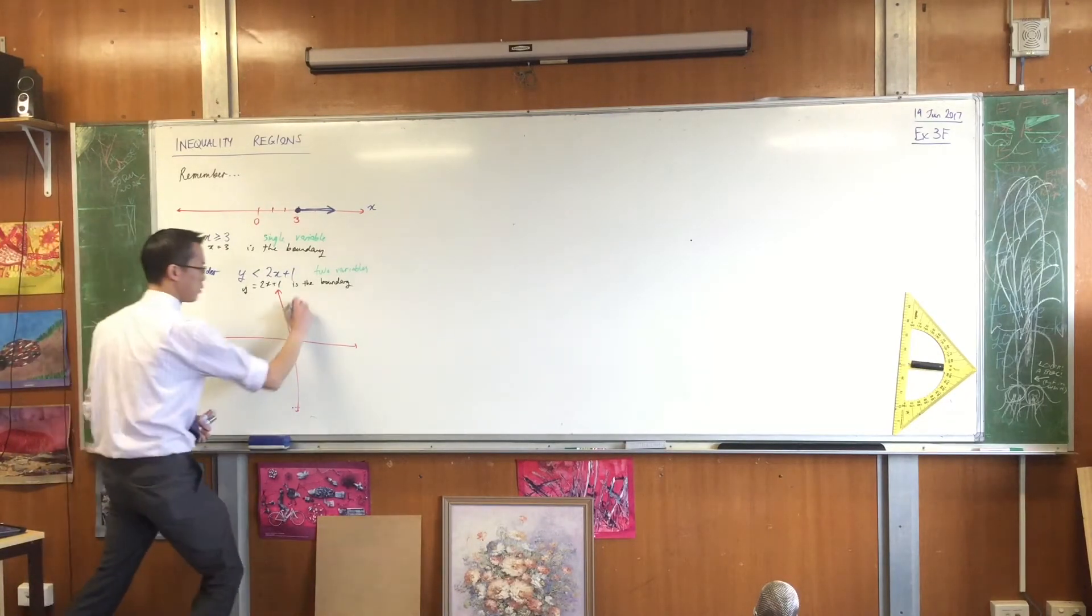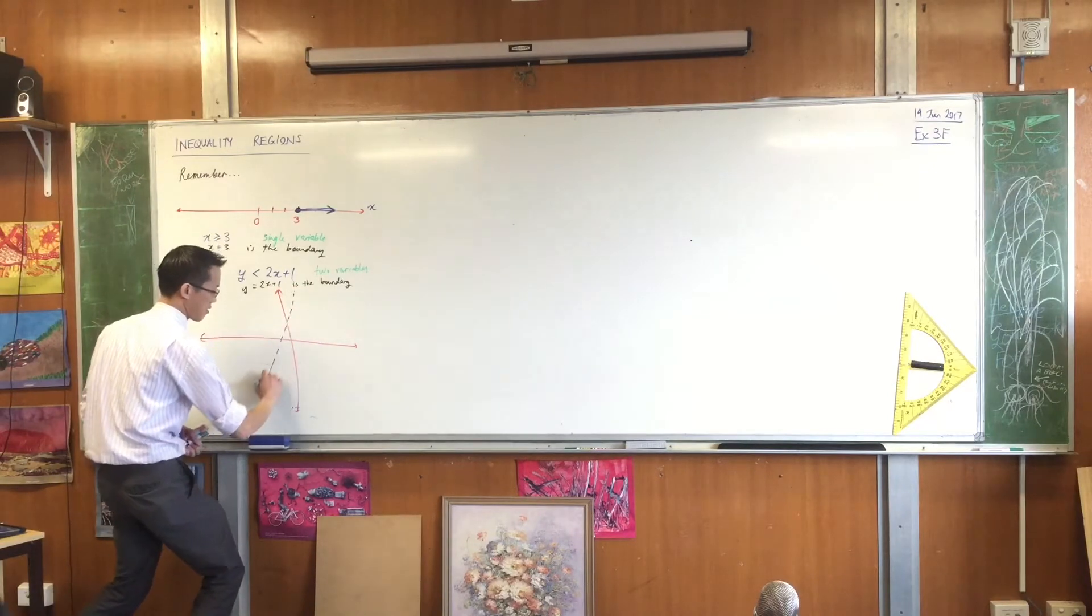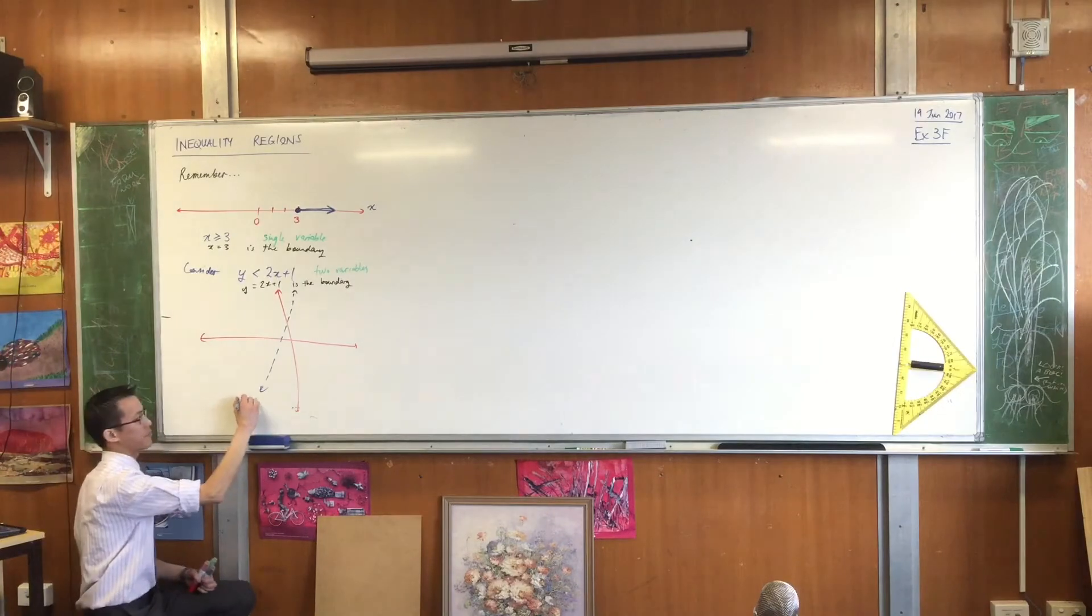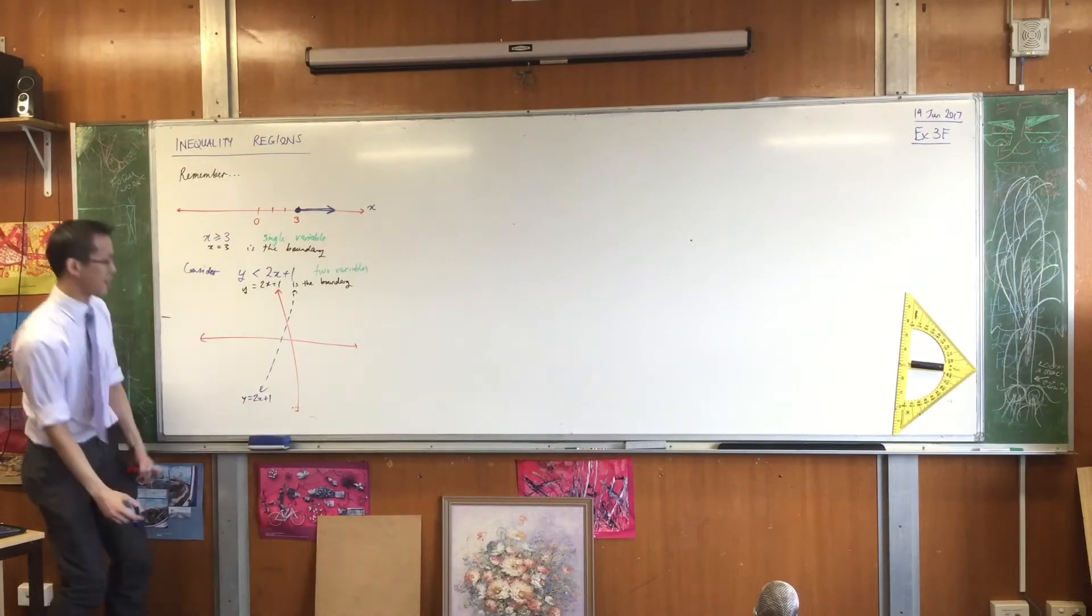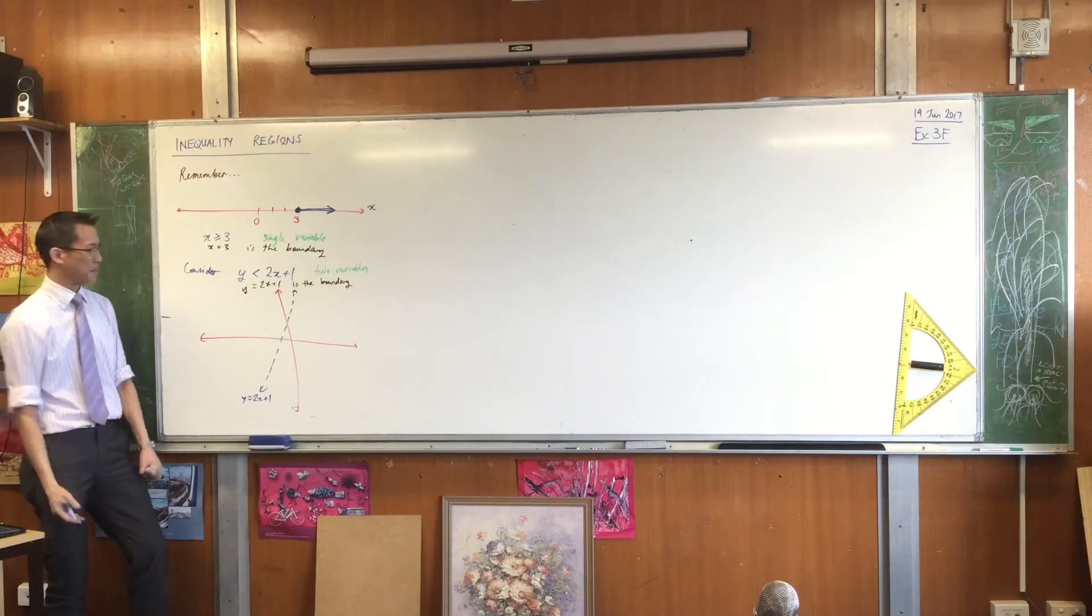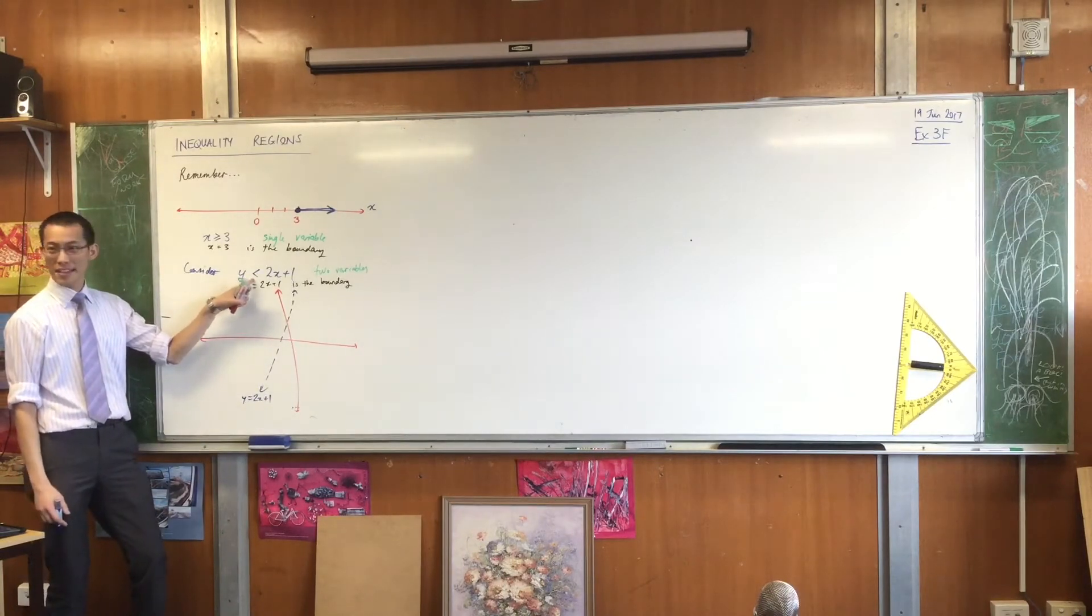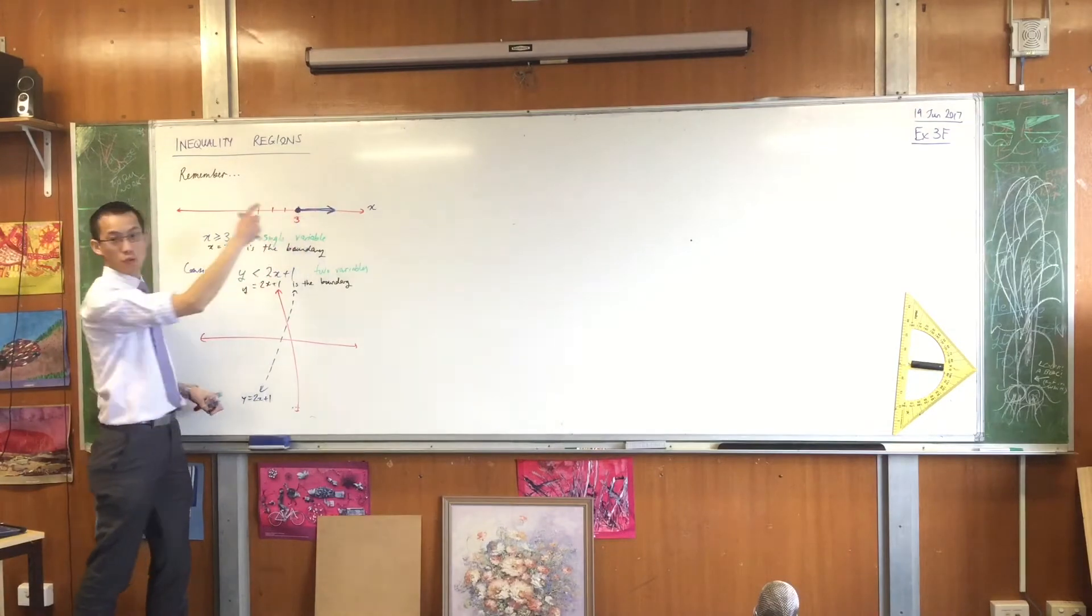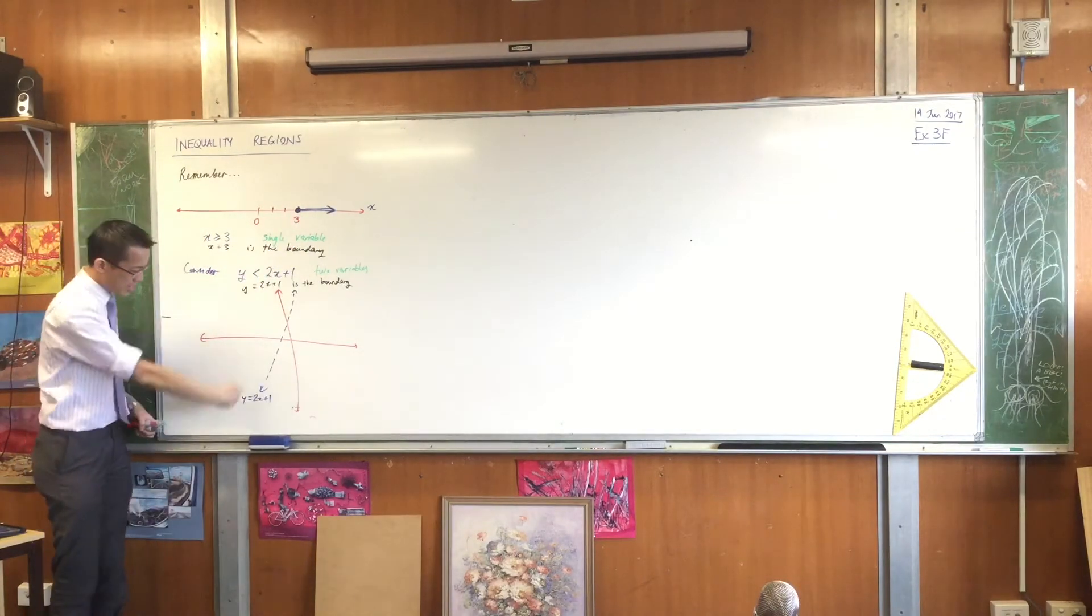So y equals 2x plus 1 looks something like this, I guess. And I'm putting it in dotted because if you have a look here, this tells me that the boundary is not included, as opposed to this, which would be solid. So there you go, I've got my boundary.